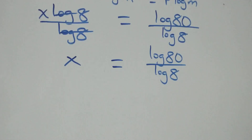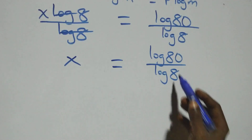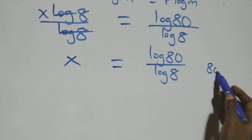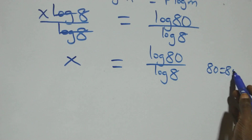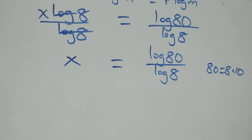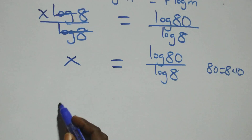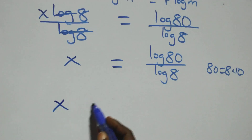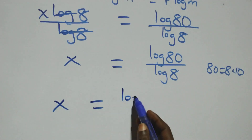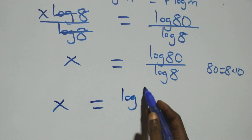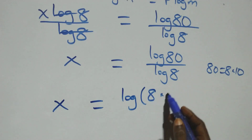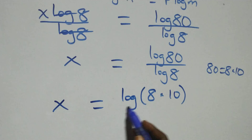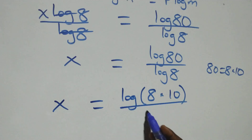Then from what we have here, we can write 80 as 8 times 10. So what we have here becomes X equals to log of 8 times 10, over log 8.